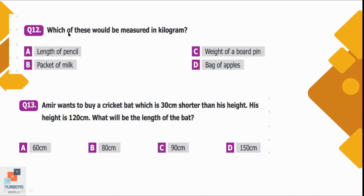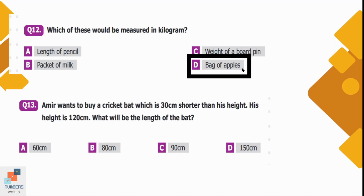Question number 12: Which of these would be measured in kilograms? Option A, length of a pencil, is measured in centimeters. Option B, a packet of milk, is measured in liters or milliliters. Option C, weight of a board pin, would be measured in grams. The last option, a bag of apples, is measured in kilograms — that is the correct option.